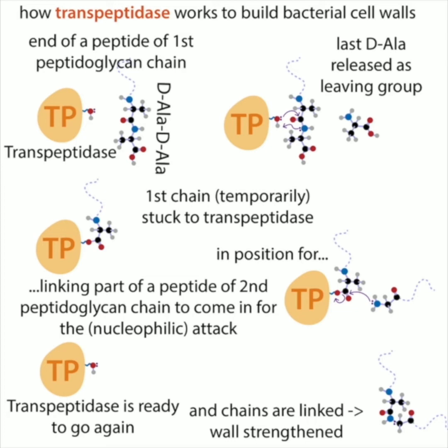These walls are strengthened — those cross-links are made with an enzyme called transpeptidase. It takes the special end of a peptidoglycan chain, which has this kind of weird reverse peptide — reverse amino acids. Amino acids are like protein letters, and it has this D-form, which is the opposite of what's normally used. The transpeptidase attacks one chain and sticks to it, then attacks a second chain. The second chain attacks that first chain and kicks off the transpeptidase, so you get that cross-link and then the transpeptidase is free to do it again.